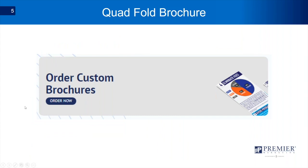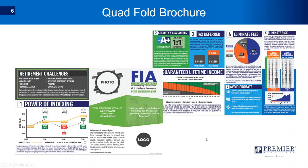We also have a section where you can order custom brochures — one of my favorite parts of the Annuity Resource Center. There's a quad-fold brochure that covers all the features and benefits of fixed indexed annuities: how they work and how they function. We also tie into a video that explains how to use this quad-fold brochure in your presentation with clients. You can order these customized with your photo, your logo, and your contact information — they're approved to leave behind with clients.